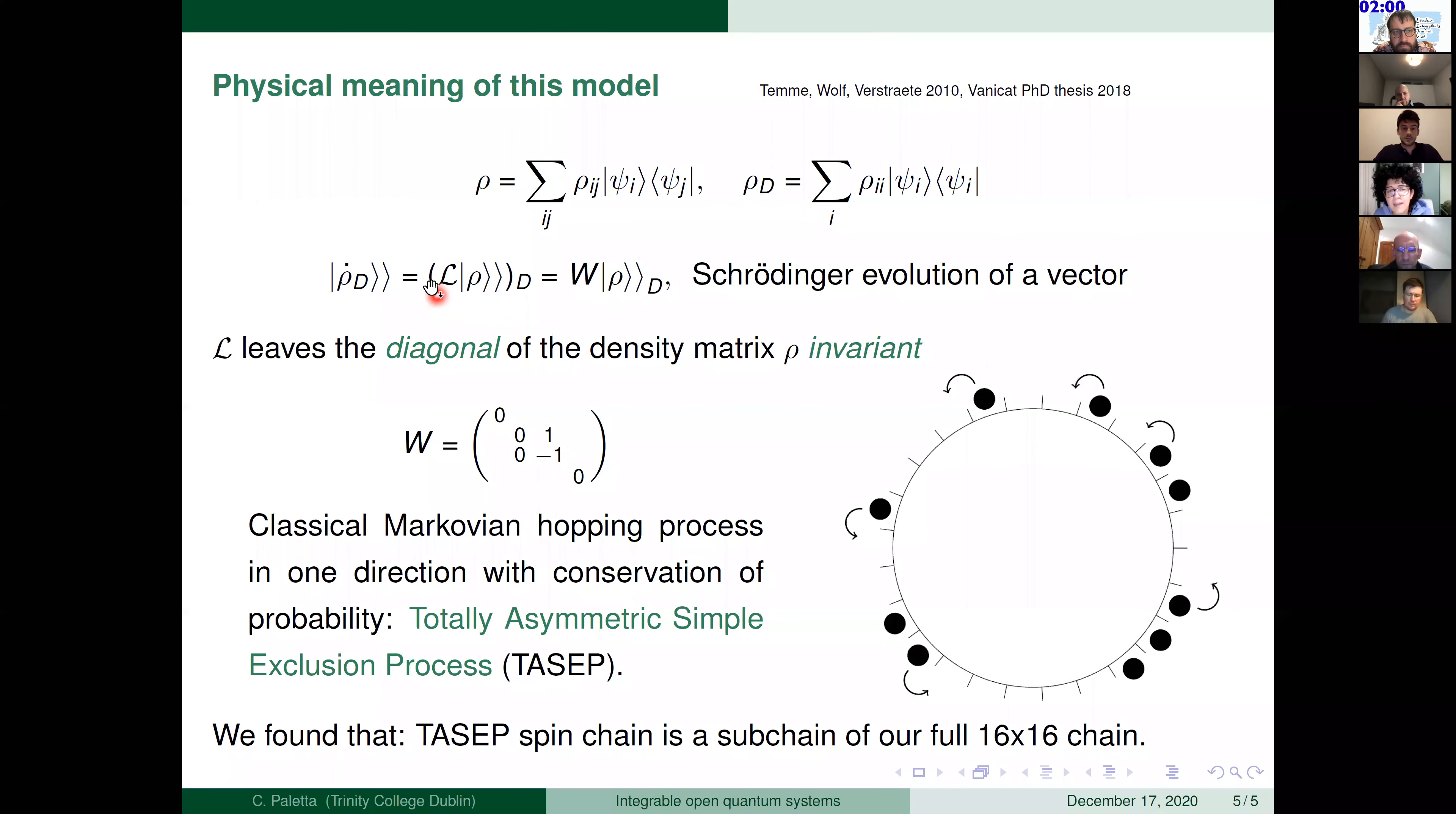And we can select, after having made this product, we can select the diagonal component of that. And what we can see is that doing that, we have the density matrix, the diagonal of the density matrix ρ remains invariant under the action of the super operator. So we really got a Schrödinger evolution of one vector. And the matrix W is given in the following form.